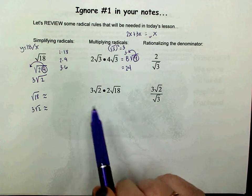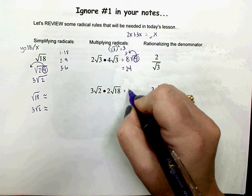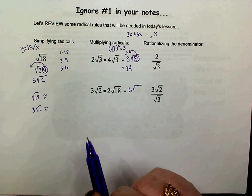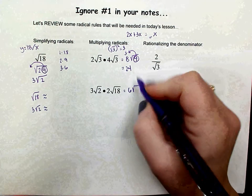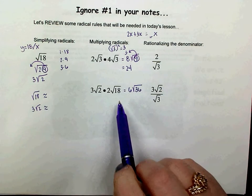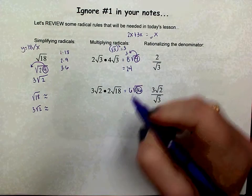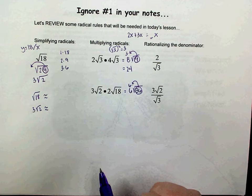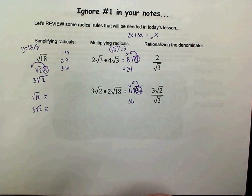We're going to go through that process again. We're going to multiply the outside numbers together: 3 times 2 is 6. And we're going to multiply the inside numbers together: 2 times 18 is 36. I can take the square root of 36 because it's a perfect square and bring it out as a 6, and it would have to multiply by the 6 out there, so that would be 36. Nothing's left in the radical.